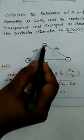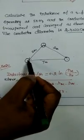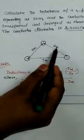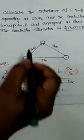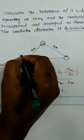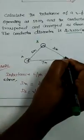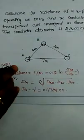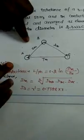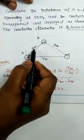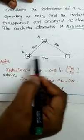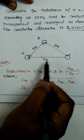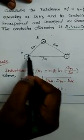Now for the conductor distances — these are the same as seen previously, but here the distances are different. Let's label them a, b, and c. The distance from a to b is 5 meters, b to c is 2 meters, and a to c is 7 meters.